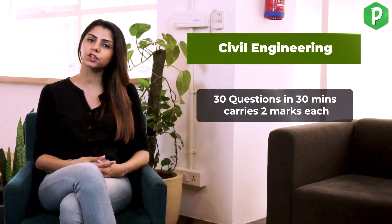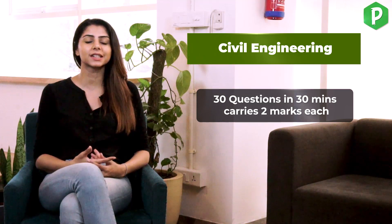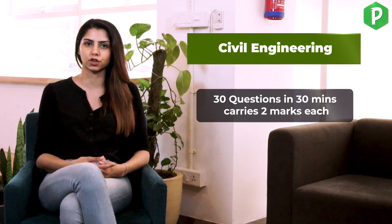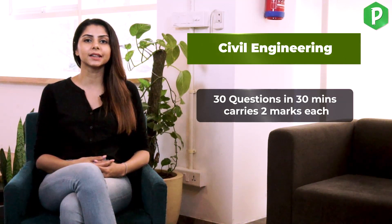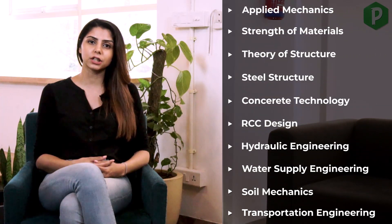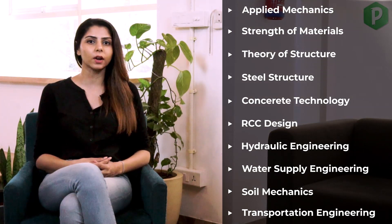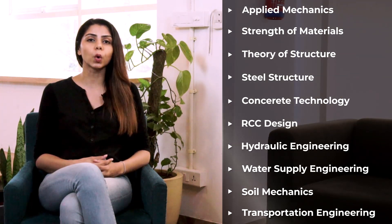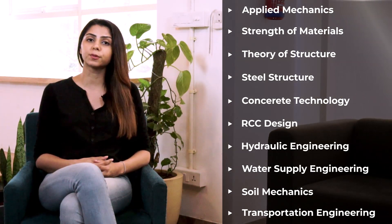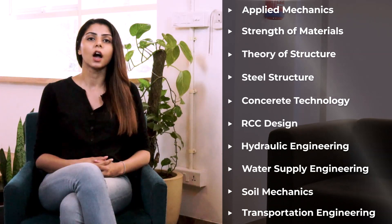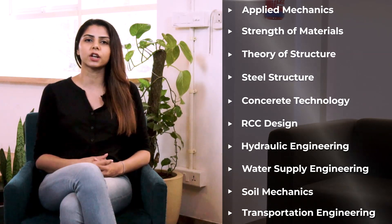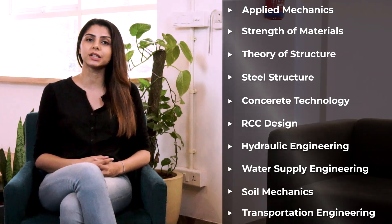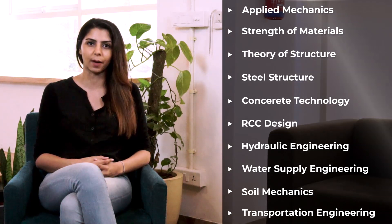Next is the Civil Engineering section. This has 30 questions, you get 30 minutes, and each question carries two marks, making it a 60-mark section. The important topics are Strength of Materials, Fluid Dynamics, Soil Mechanics, and Railway Engineering. The rest are on the screen. People looking for core civil jobs should definitely opt for this section, as a lot of core civil engineering companies hire through the TCS ION CCQT exam.